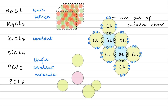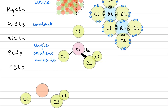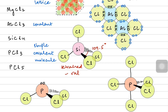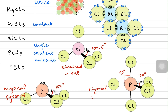Silicon tetrachloride has a tetrahedral structure with four chlorine atoms and a bond angle of 109.5°. Phosphorus trichloride has three chlorine atoms around the central phosphorus with one lone pair, giving a trigonal pyramidal shape and a bond angle of 107°. Phosphorus pentachloride has five chlorine atoms around the central phosphorus, with bond angles of 120° and 90°, giving a trigonal bipyramidal shape.